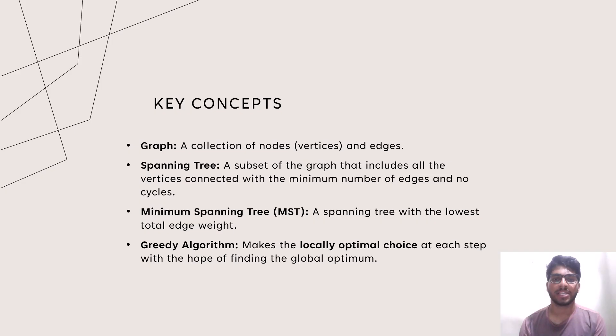The next topic is Key Concepts. Graph: a collection of nodes and edges. Spanning Tree: a subset of the graph that includes all the vertices connected with the minimum number of edges and no cycles.